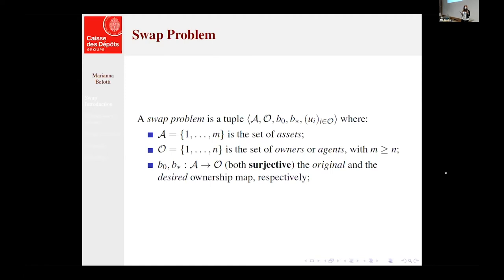So our ownership transaction changes. We can define this problem thanks to a tuple of asset, owners, and subjective map that denotes the original configuration that we have, and the desired one, B*, that we want. And the cardinality of the set of assets is greater with respect to the owners one, because we don't want shared ownership of an asset. We want owners to have more assets, but not to share the ownership of a single asset.